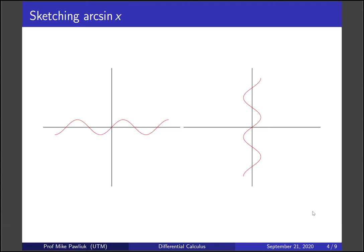But now we have an issue, which is that this thing over here is not a function. It badly fails the vertical line test. So in order for it to pass the vertical line test, we're going to need to restrict the domain of the original function sine of x.